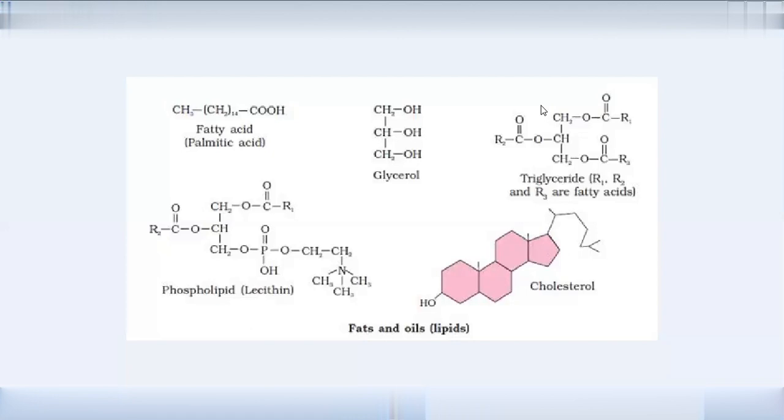For example, in the polar regions, the eskimos have high fat content. So it helps fat act as insulating material. The fat is stored in adipose tissue.